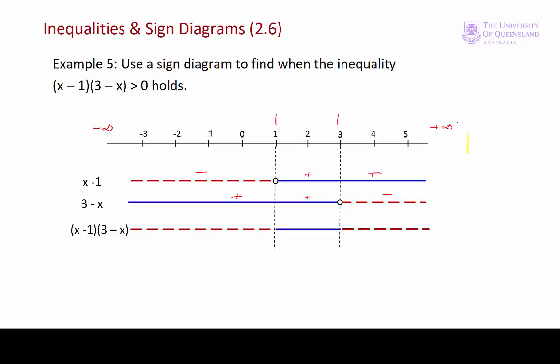At the points 1 and 3 our function takes value of 0. So we indicate that. We want to see when our left hand side, that product, is greater than 0. So we look at the last line in our sign diagram. That's our interval there. It's strictly positive. So we don't include the endpoints 1 and 3. So we can say that our inequality holds for the open interval 1 to 3. Or for the interval that x is greater than 1 or less than 3.